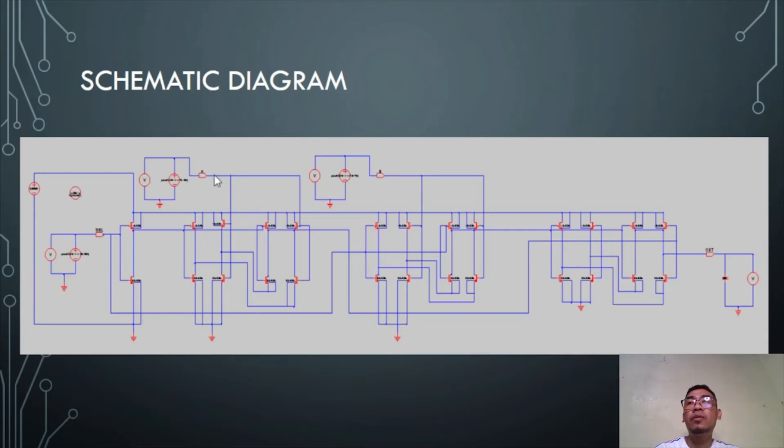On input A, we have a pulse of 0, 3.3, 0 nanoseconds delay, 1 nanosecond rise time and fall time, 75 nanoseconds 50% duty cycle, and 150 nanoseconds period.